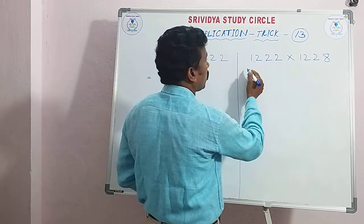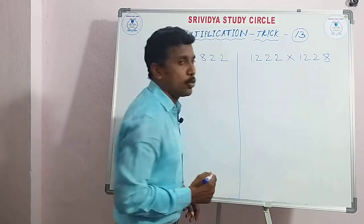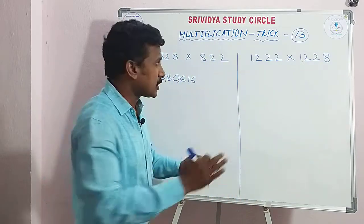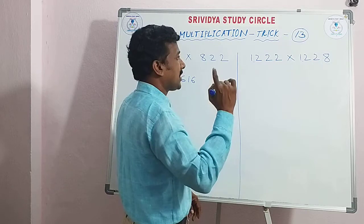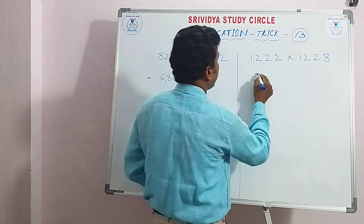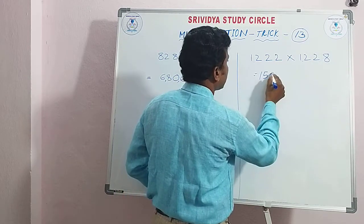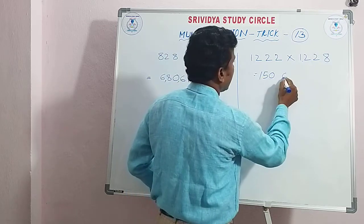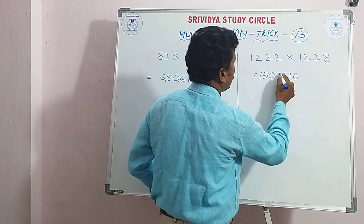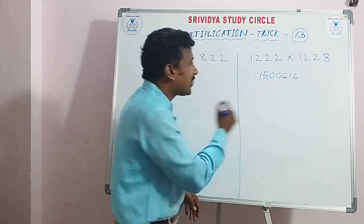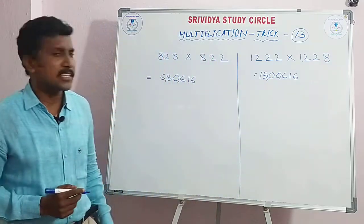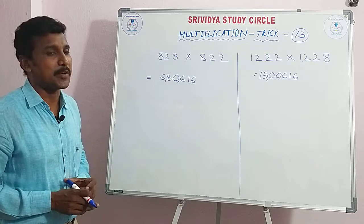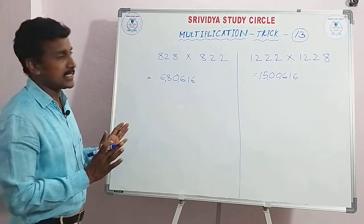Now for four digits: 1222 × 1228. This also takes only a fraction of seconds. 144 plus 6 is 150. And with the remaining digits, the answer is 15 lakh something — within 10 seconds. I will explain this to the children.